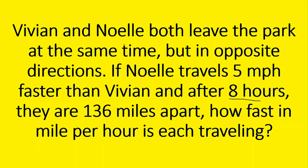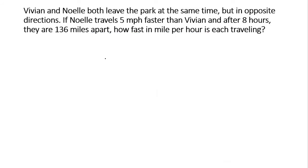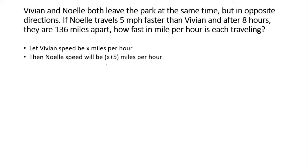We need to find the speed of Vivian and the speed of Noel. Let us first assume that the speed of Vivian is x miles per hour. It is given that Noel travels five miles per hour faster than Vivian, so if Vivian's speed is x miles per hour, then Noel's speed will be x plus five miles per hour.